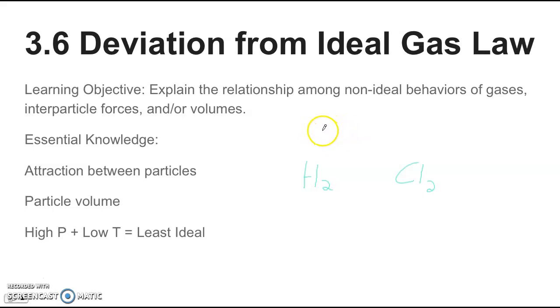And the question is, which one would be more ideal? So you want to say, which one's more ideal? So you have H2 and Cl2. And let's say you have the same pressure. These two gases are under the same pressure and you have the same Kelvin temperature. So you want to look at these two factors right here. Attraction between particles. So in hydrogen gas and chlorine gas, you want to say, which one has a greater intermolecular force? Well, they're both diatomics. So they're both going to have London dispersion forces, but Cl2 is a larger particle. So it's more polarizable. That leads to a stronger London dispersion force. So Cl2 has a greater attraction between the particles.